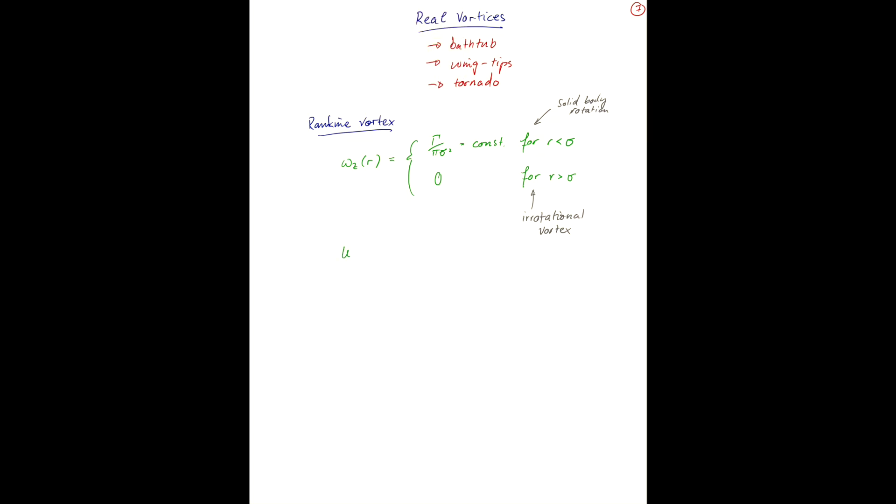In this case, your angular velocity as a function of the radius would be r times gamma over 2 pi r squared for r less than sigma, and 1 over r times gamma over 2 pi for r greater than sigma.